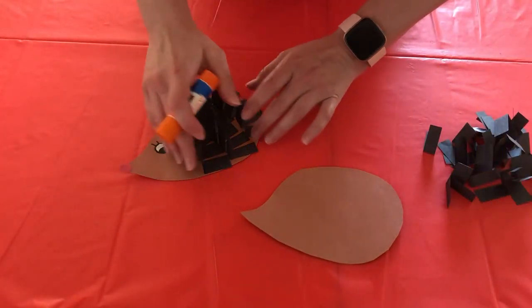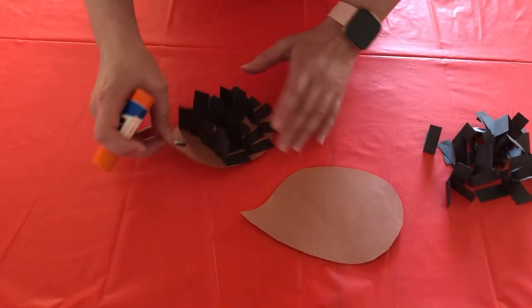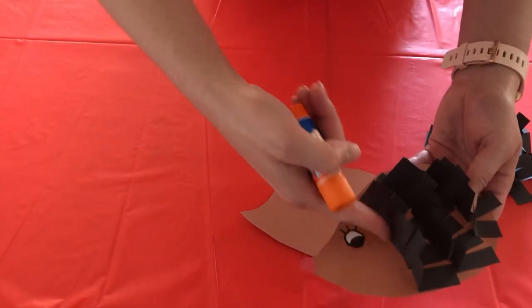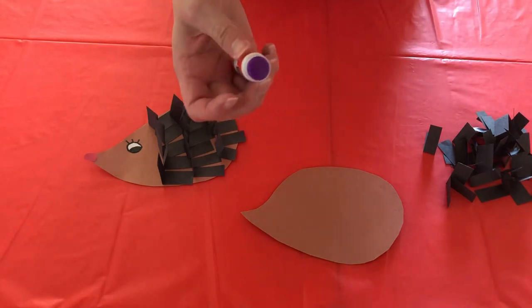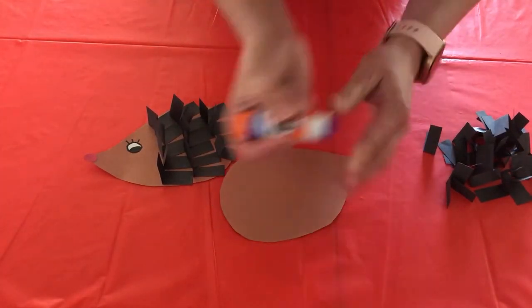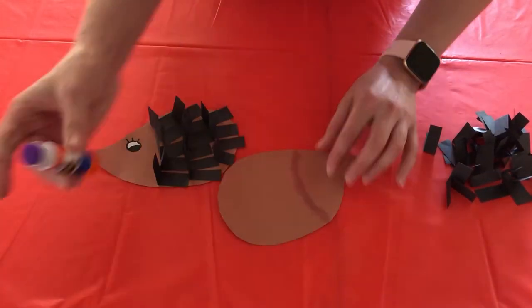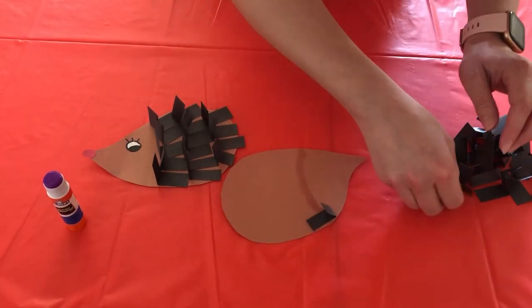Next we are going to glue down our quills. When we glue it down, you're going to want to make sure you leave space for its cute little face here. So keep that in mind when you're gluing. We're going to do this a row at a time.